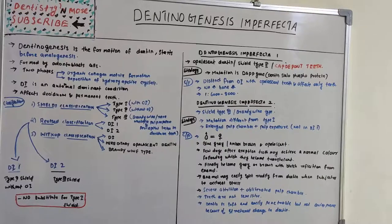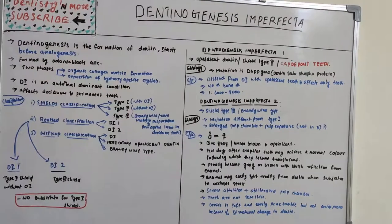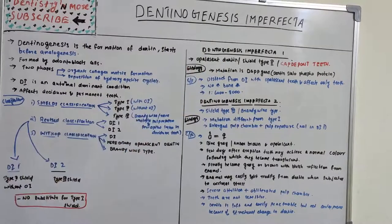Welcome back to a new session on dentistry and more. Today's topic is dentinogenesis imperfecta. Just as we interpreted amelogenesis imperfecta, we need to interpret dentinogenesis imperfecta — the imperfect formation of dentine, or the problem with odontoblasts. Let's see the details of dentinogenesis imperfecta.